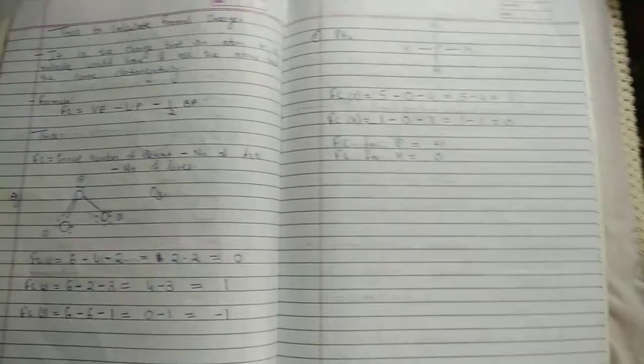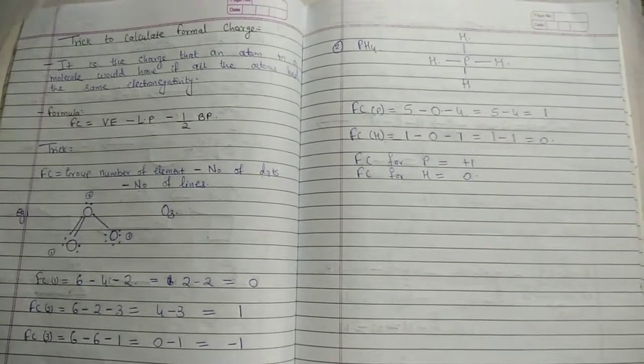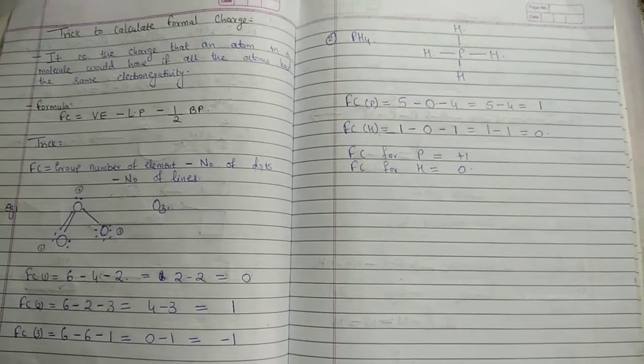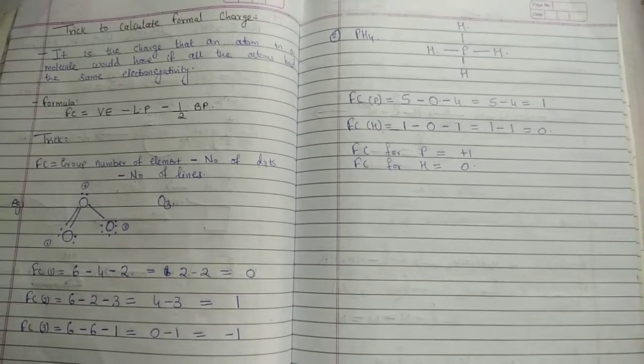So, that is how we get formal charge for phosphorus and hydrogen that is plus 1 and 0. Isn't this an easier method? If you have any queries, then please mention in the comment section below. I would love to help. Thank you.